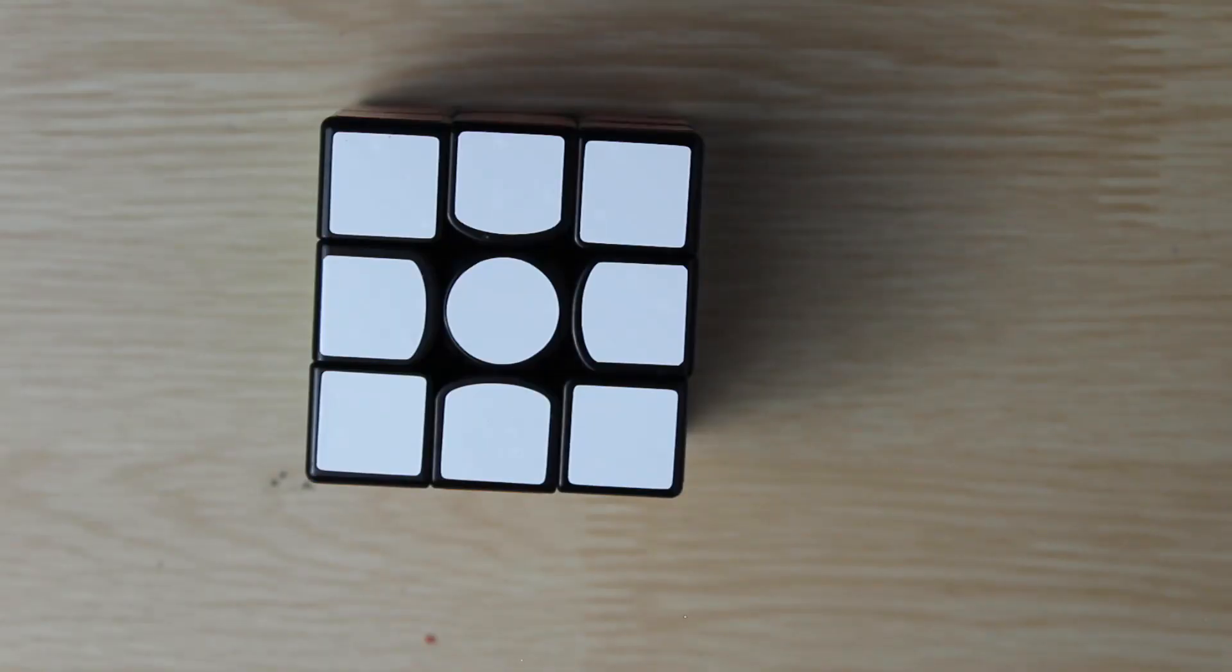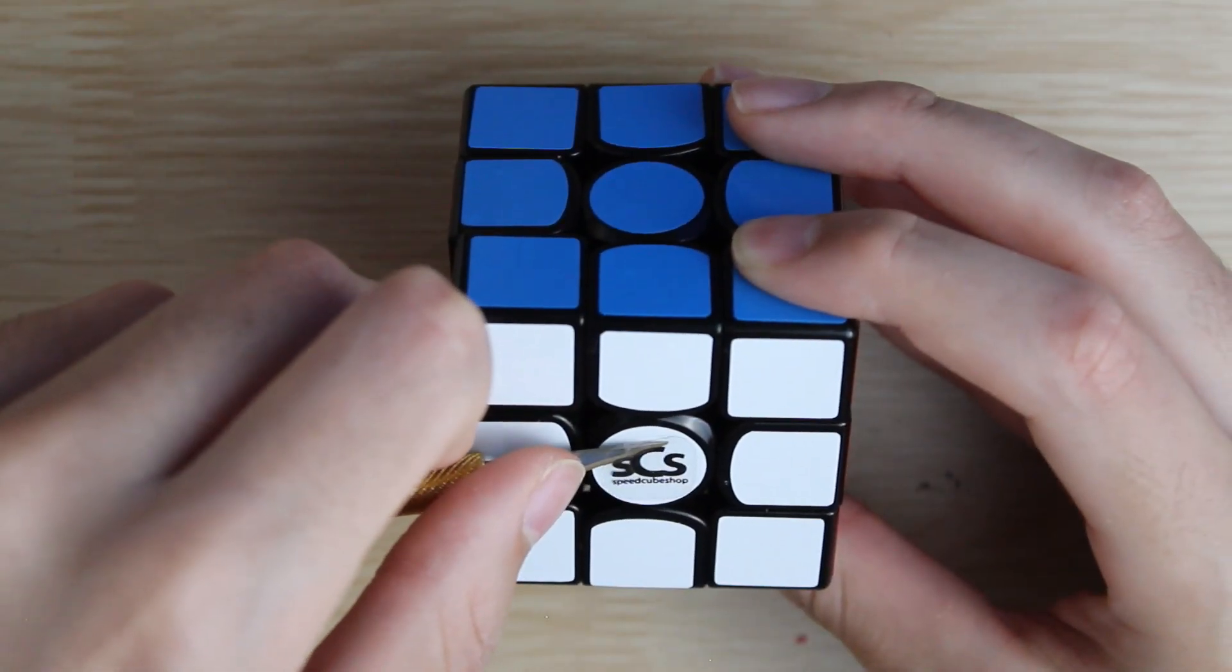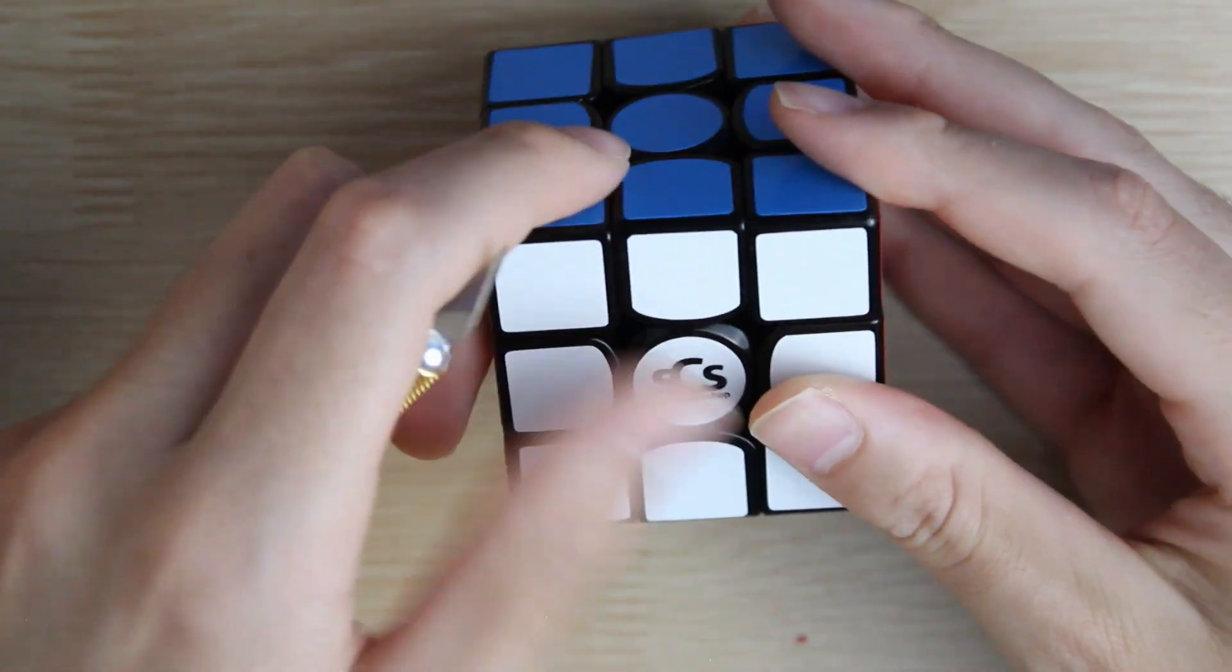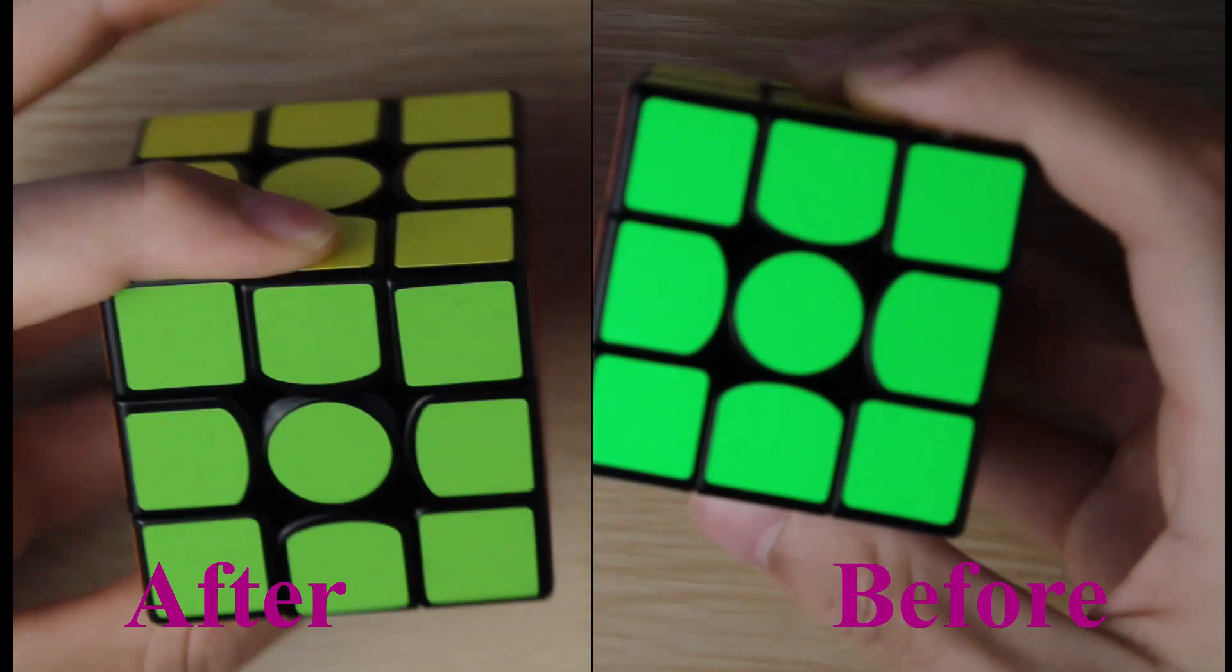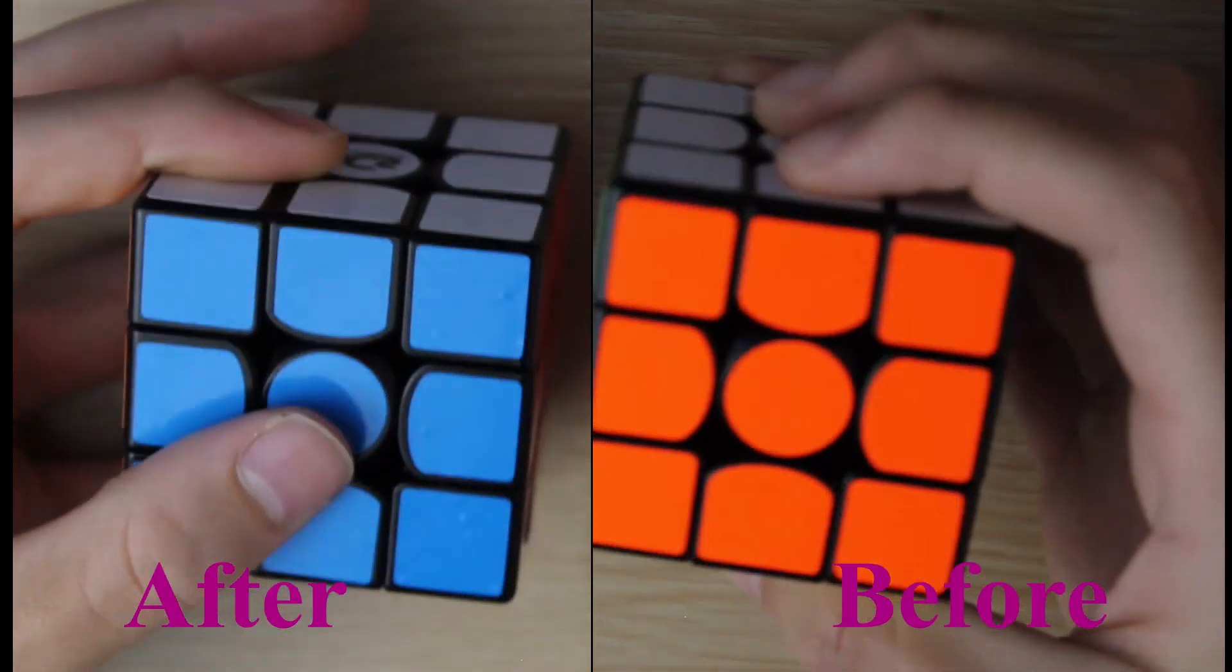The last step of course is to add the speedcube shop sticker. There we are. Let's do a comparison of the Qiyi Wu Wei M before and after the re-stickerification process.